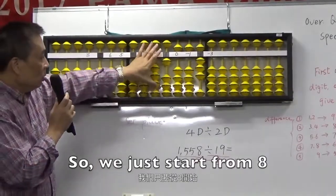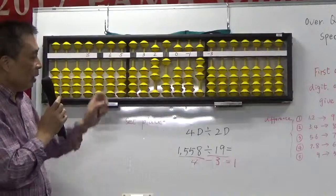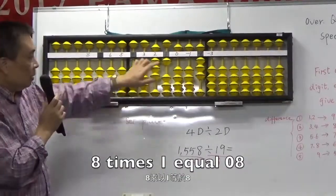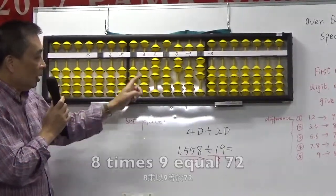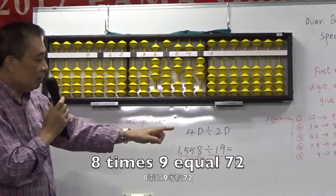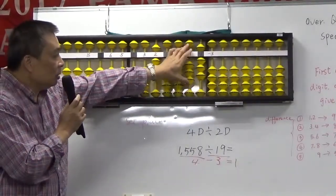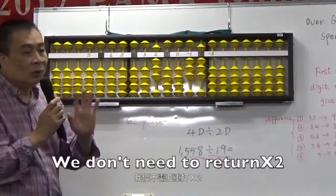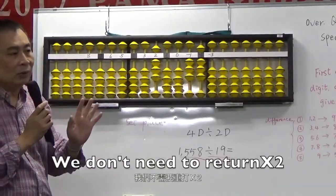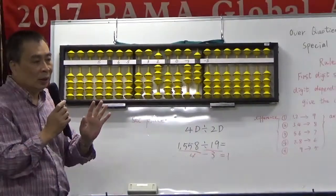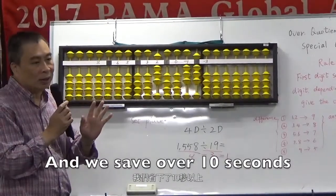So we start eight only: 1, 089, 89, 8, 72. We don't need to retain. We save over ten seconds.